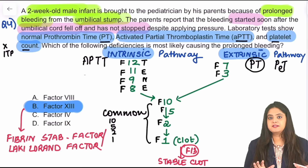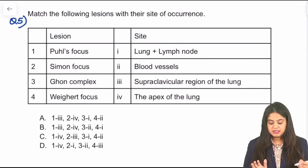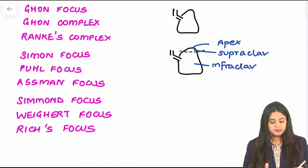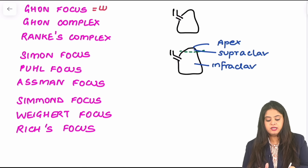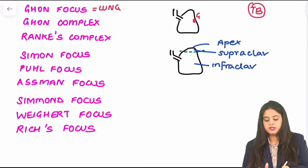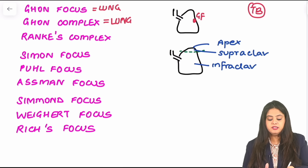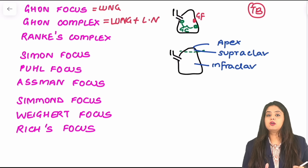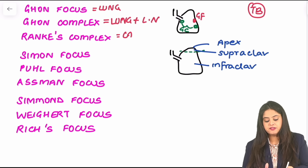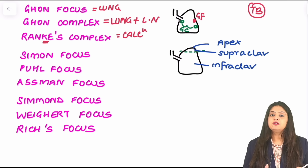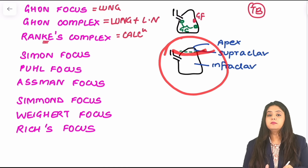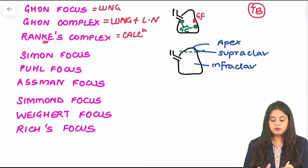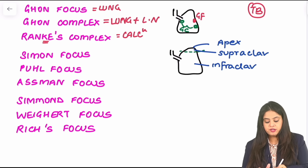Question 5 is a matching question on TB lesions and their sites. If the lesion occurs only in the lung, it is called the Ghon focus. If both the lung and hilar lymph nodes are affected, it is called the Ghon complex. If calcification occurs in this complex, it becomes Ranke's complex. Dividing the lung by the clavicle: the apex has the Simon focus, the supraclavicular region has the Pearl focus, and the infraclavicular region has the Assmann focus — remember as the mnemonic SPA (Simon, Pearl, Assmann) from top to bottom.